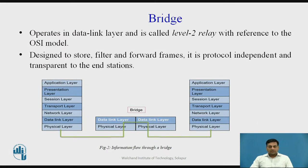A bridge operates in the first two layers of the OSI model — the physical layer and the data link layer — and is sometimes called a Level 2 Relay. As shown in figure number 2, both the physical layer and data link layer are part of a bridge. Bridges are designed to store, filter, and forward frames. They are protocol independent and transparent to the end stations.